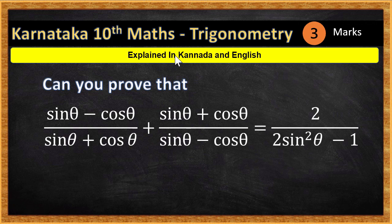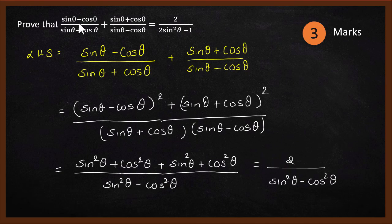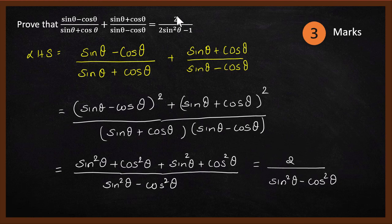Hello, in this video we will look at a three-mark trigonometry problem. The expression is: sin theta minus cos theta divided by sin theta plus cos theta, plus sin theta plus cos theta divided by sin theta minus cos theta. That is equal to 2 divided by 2 sin squared theta minus 1. This is what we have to prove — a three-mark question from the model question paper.